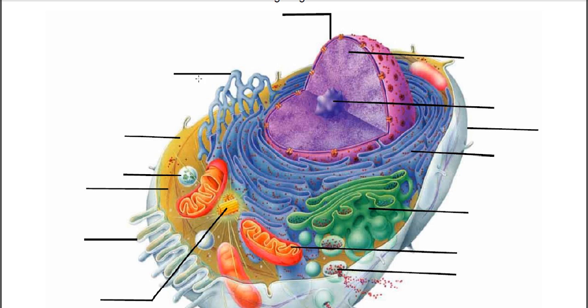Over here is the smooth ER, the smooth endoplasmic reticulum. This is the rough ER or rough endoplasmic reticulum. You can see that the rough has these dots on it. The dots are ribosomes. So the rough ER has ribosomes, whereas the smooth ER does not. The rough ER is next to the nucleus, where the smooth ER is further away from the nucleus.